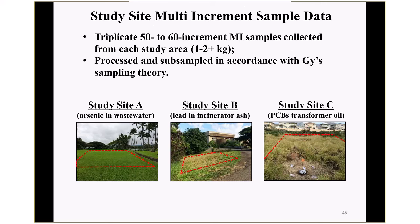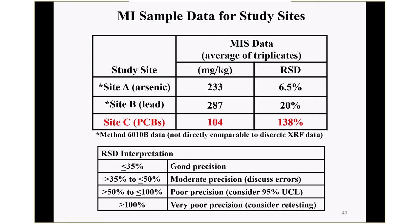We collected multi-increment samples at all three study sites. These are small areas between 5,000 and about 15,000 square feet. We collected triplicate 50 to 60 multi-increment samples in a grid-like fashion across each site, each sample one to two kilograms, processed and subsampled in accordance with G sampling theory at the laboratory. Here's what we got: at study site A, average concentration of the triplicate multi-increment samples was 233 ppm, relative standard deviation 6.5% — risk assessors, you can take this to the bank. That's very good precision.